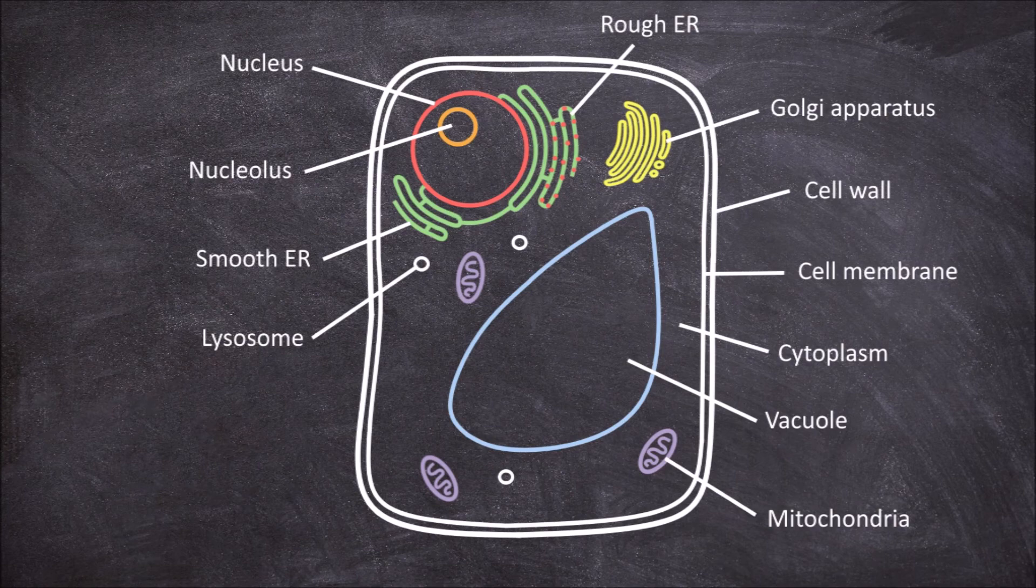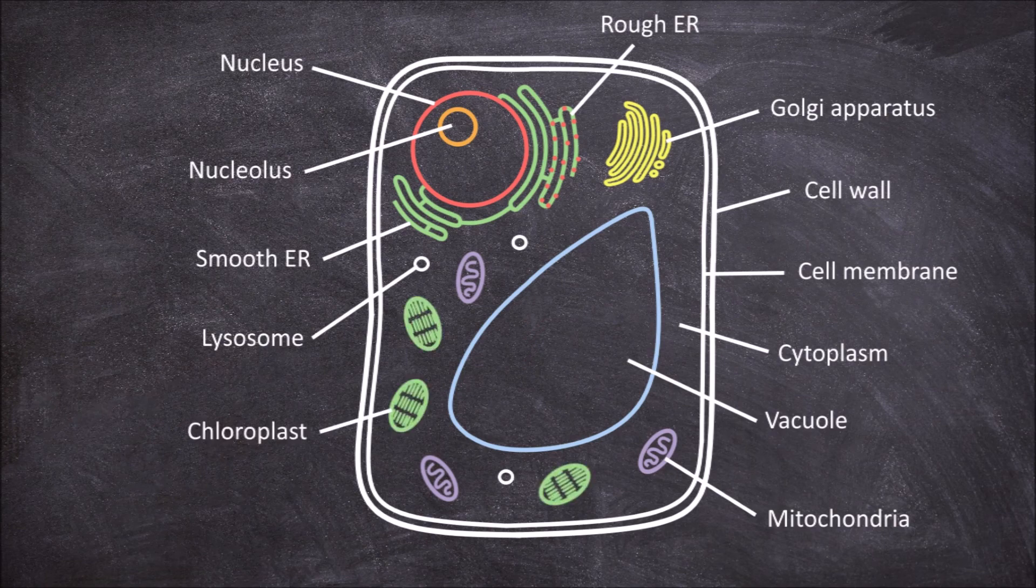The last organelle found in plant cells are the plastids. These are double membraned organelles and include the chloroplast. The chloroplast is involved in the process of photosynthesis.